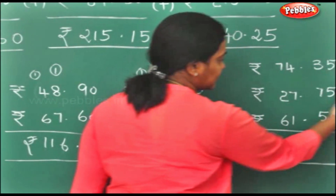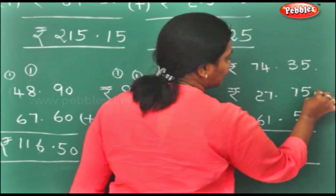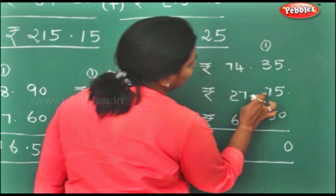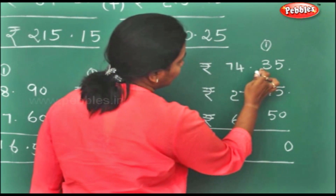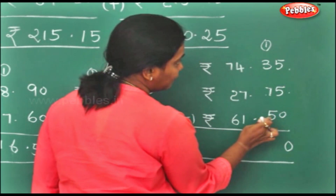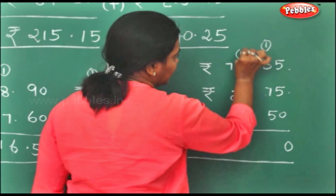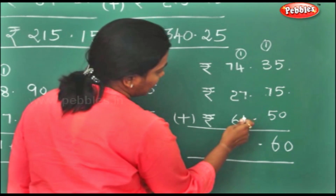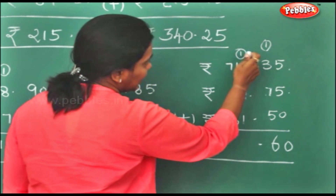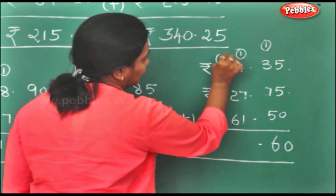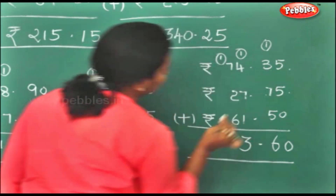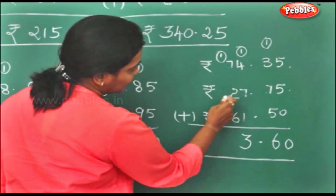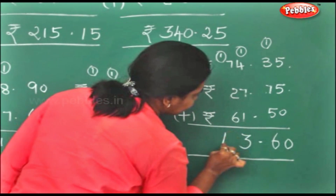Again, we will start doing from the paise to the rupees. 5 plus 5 is 10. 7 plus 3 is 10. 10 plus 5 is 15. 15 plus 1 is 16. 7 plus 1 is 8. 8 plus 1 is 9. 9 plus 4 is 13. 7 plus 1 is 8. 8 plus 2 is 10. 10 plus 6 is 16.